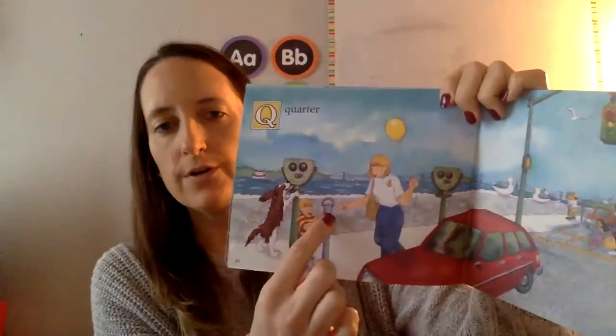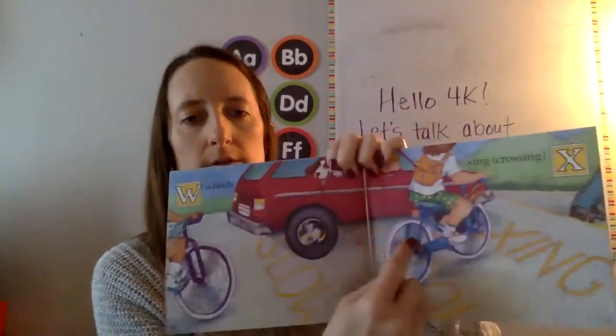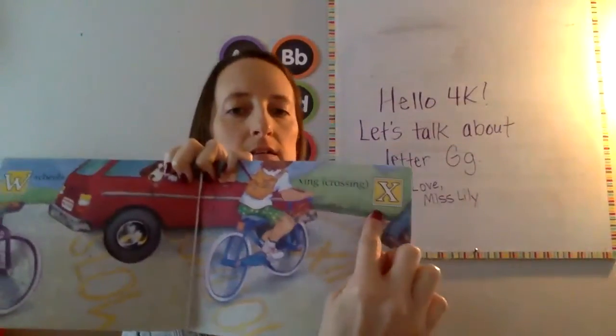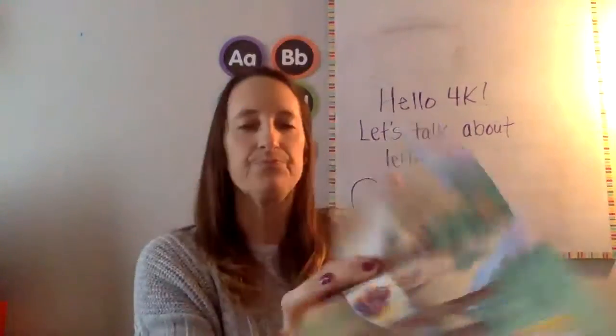Q is for quarter — putting in there a quarter. R is for red light. S is for stop sign. T is for traffic, lots of cars. U is for underpass — goes under the bridge. V is for van. W is for wheels — bike wheels, car wheels. X is for crossing. Y is for yield sign — yield means slow down and be careful. And Z is for zoom. Cars go zoom.